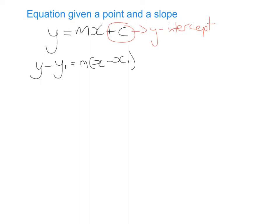So let's say we're given a question where we're told that the slope is equal to 5 and that the point 1, 3 is on the line. We wouldn't be able to use y equals mx plus c because we don't know the y-intercept, but we can use this formula because we know the slope which is 5 and we know an x1 and a y1 on the line.